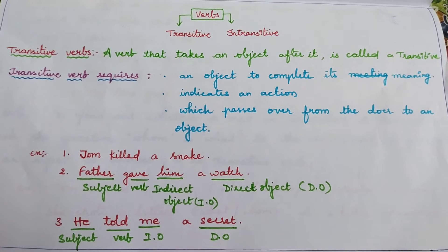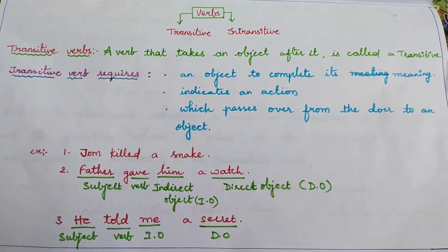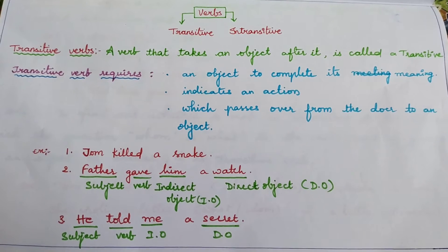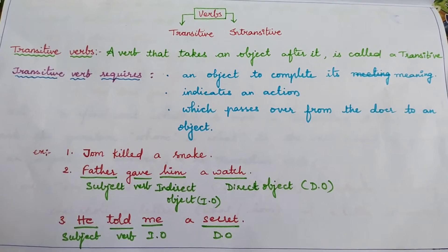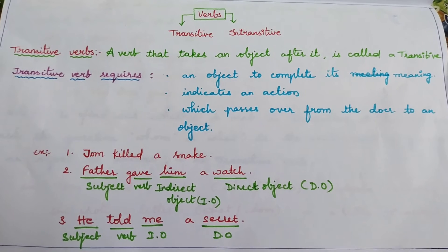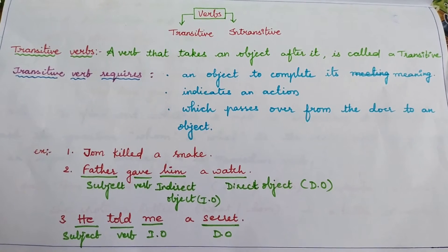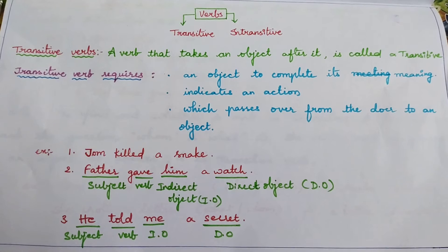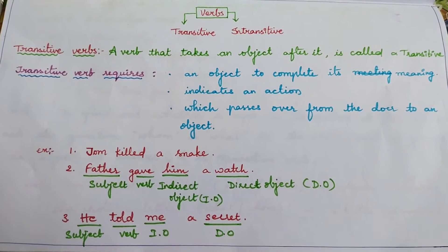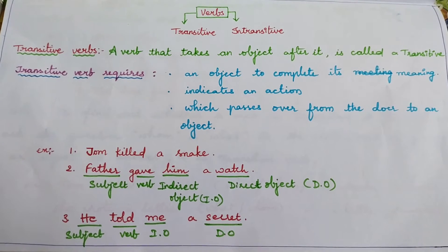Transitive verbs are the verbs which carry actions from doer of the sentence to object. Doer of the sentence here is subject. One who does the action. So one who does the action, from that subject, action will be passed to object.